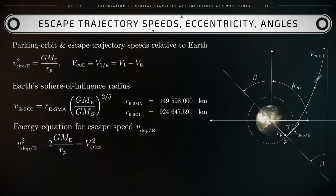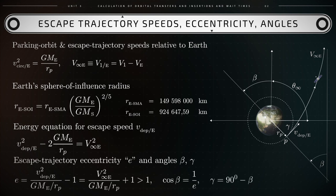The departure speed v_dep_e needed by the spacecraft to leave Earth's orbit is connected to v_infinity_e through the energy equation: v_dep_e squared minus 2 gme over rp equals v_infinity_e squared. The eccentricity e is then obtained as e equals (v_dep_e squared over gme over rp) minus 1. Hence cosine of beta equals 1 over e, which leads us to calculate the angle gamma equal to 90 degrees minus beta.